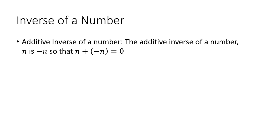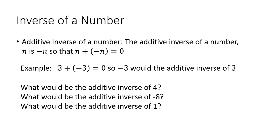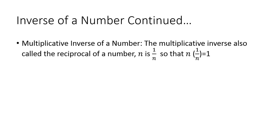Next we have the inverse of a number. The additive inverse of a number n is negative n, so that when you add those two numbers they equal zero. For example, three plus negative three equals zero, so negative three is the additive inverse of three — basically it's just the opposite. What is the additive inverse of four? Negative four. What about negative eight? It's eight. What about one? Negative one.